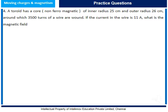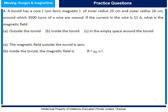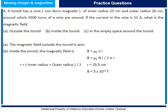Question 4: A toroid has a non-ferromagnetic core of inner radius 25 cm and outer radius 26 cm, around which 3500 turns of wire are wound. The current in the wire is 11 A. What is the magnetic field outside the toroid, inside the toroid, and in the empty space around the toroid? The magnetic field outside the toroid is 0. Inside the toroid, the magnetic field is given by B = μ₀nI = μ₀NI / (2πr), where r = (inner radius + outer radius) / 2 = 25.5 cm. Substituting relevant values gives B = 3 × 10⁻² Tesla. In the empty space around the toroid, the magnetic field is 0.